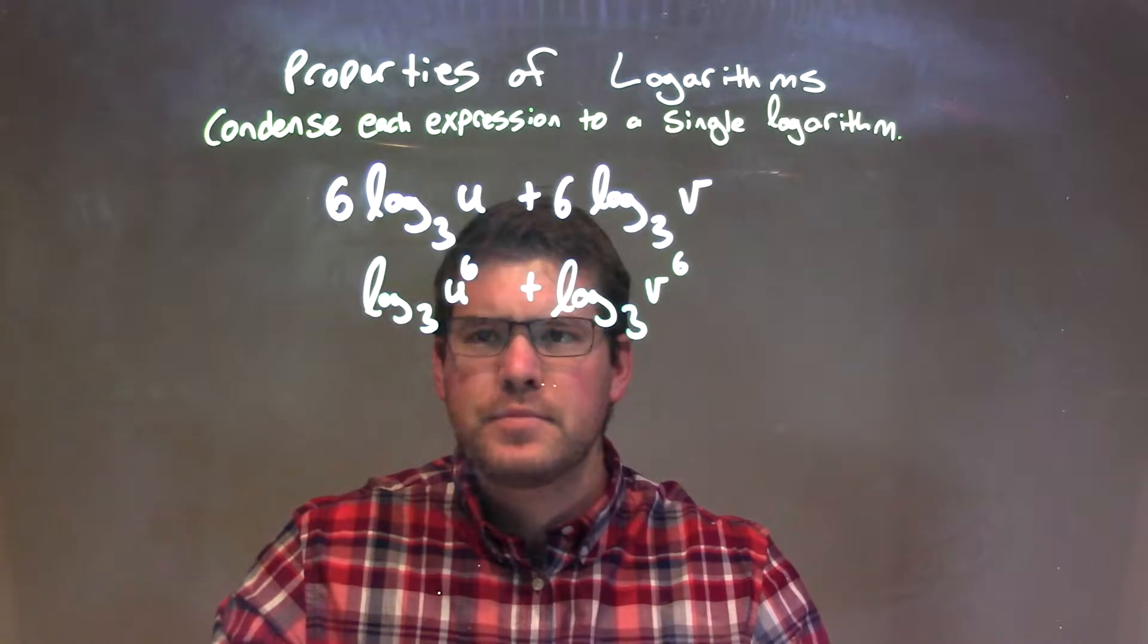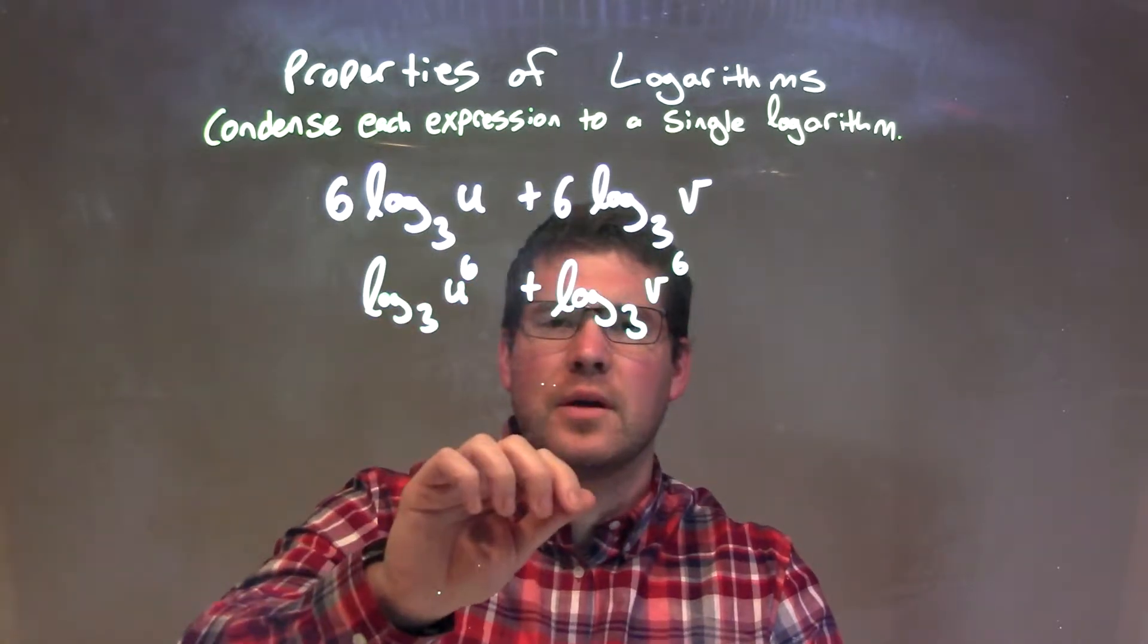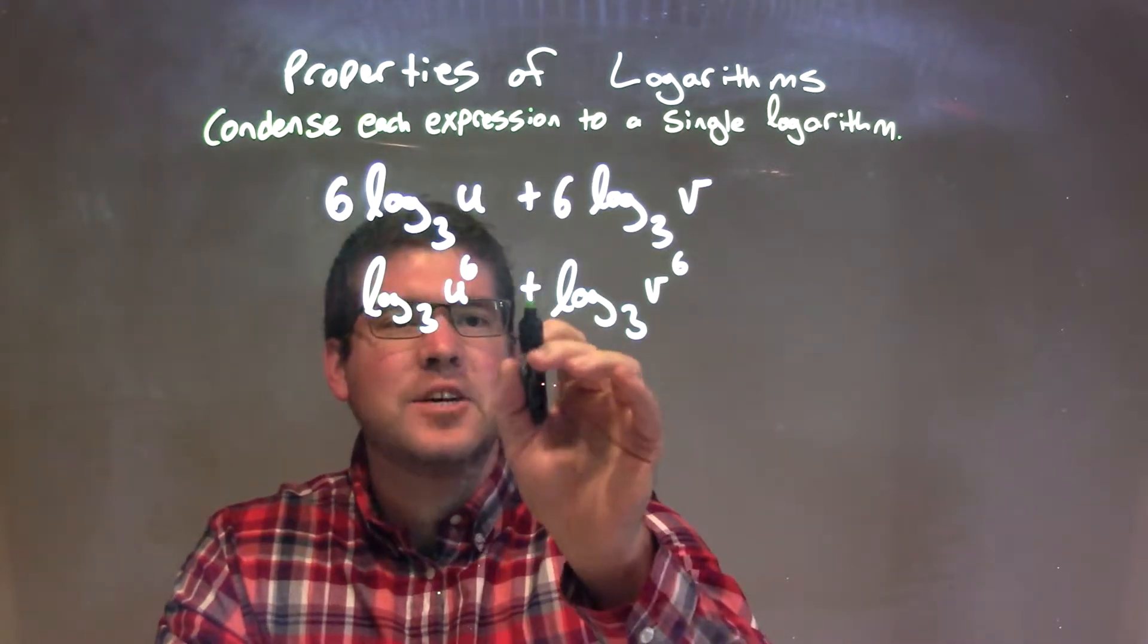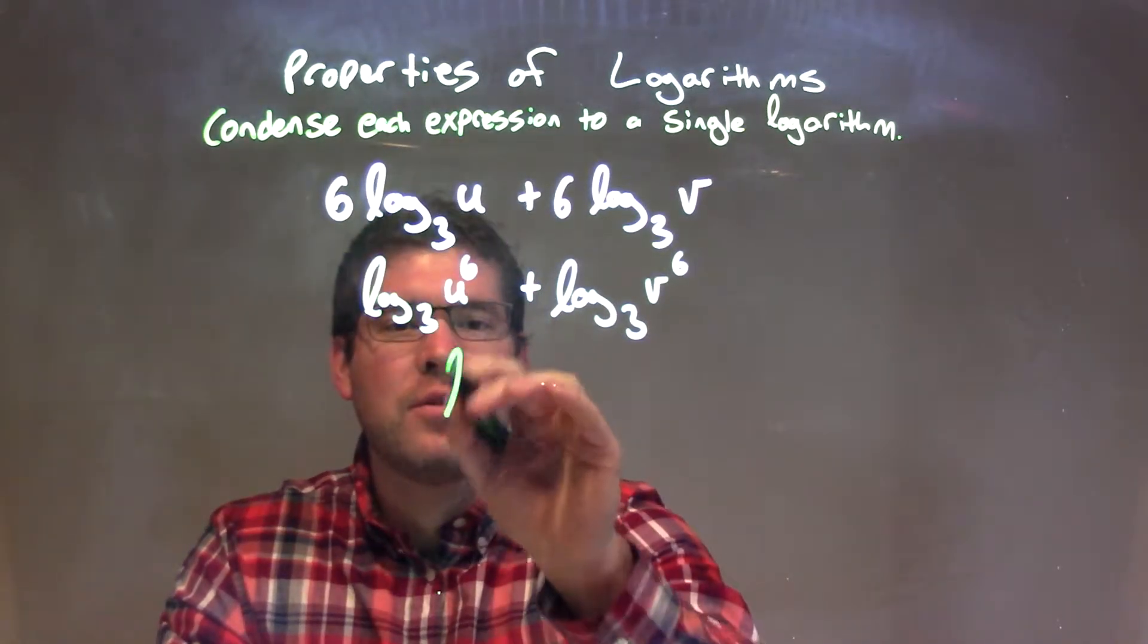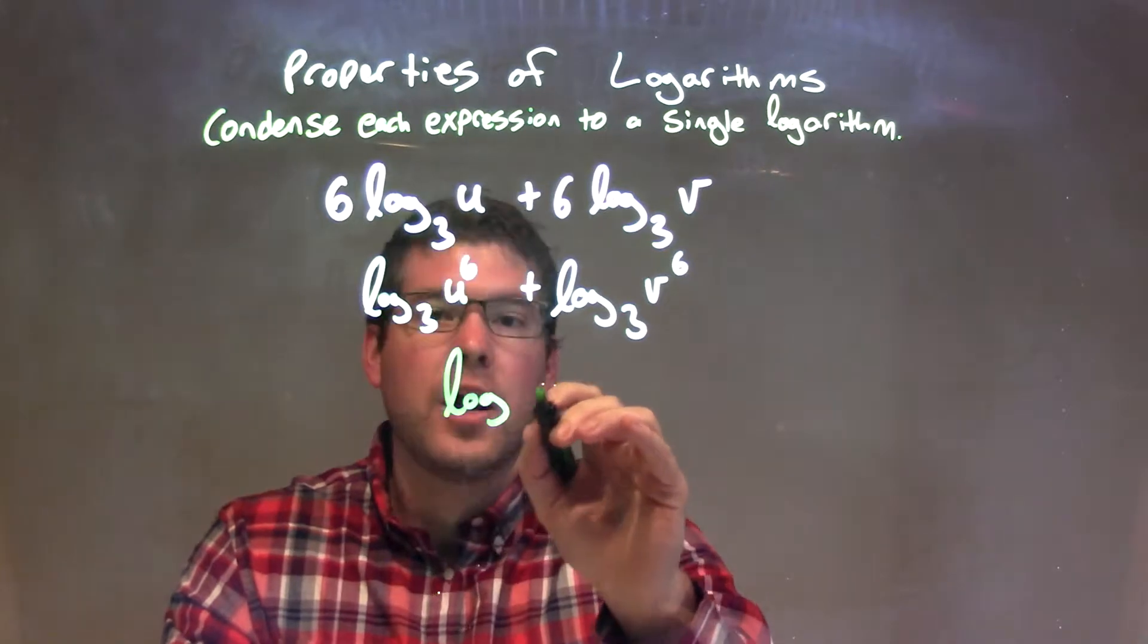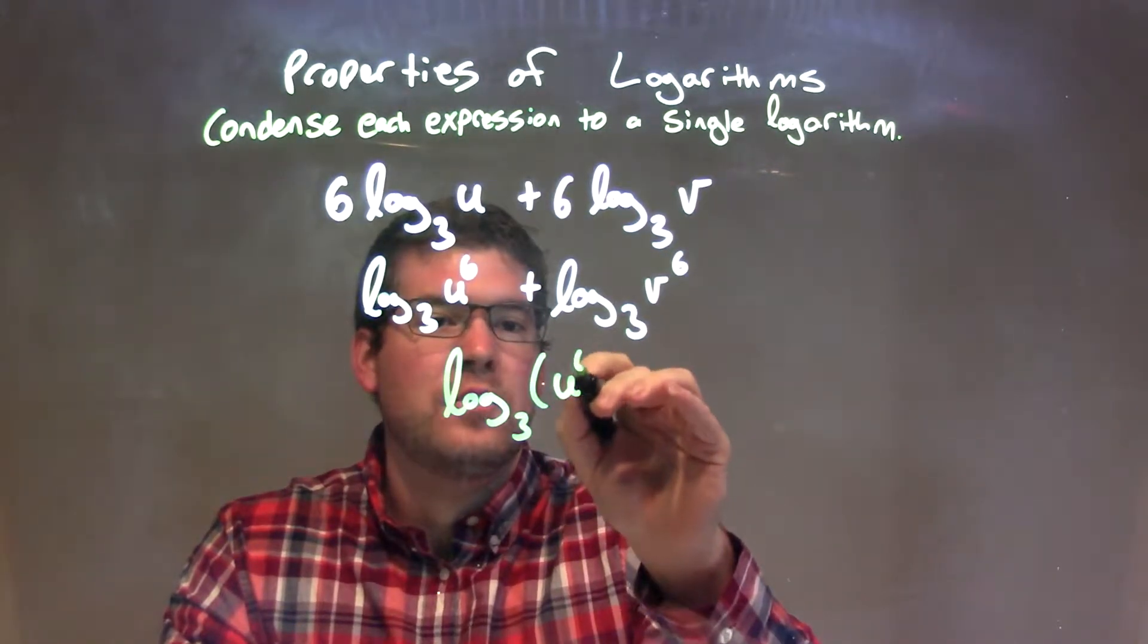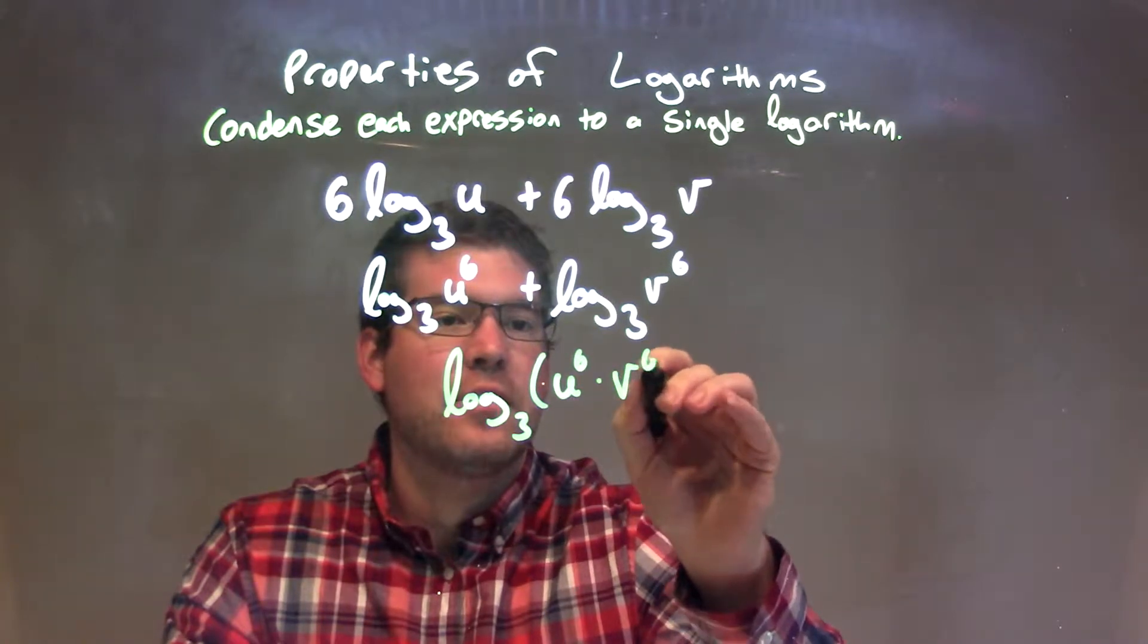So now from here, we can condense this to one big logarithm, right? They're both at a base of 3. So when doing so, that addition becomes multiplication. So we have log of 3, we'll put parentheses now, of u to the 6th times v to the 6th.